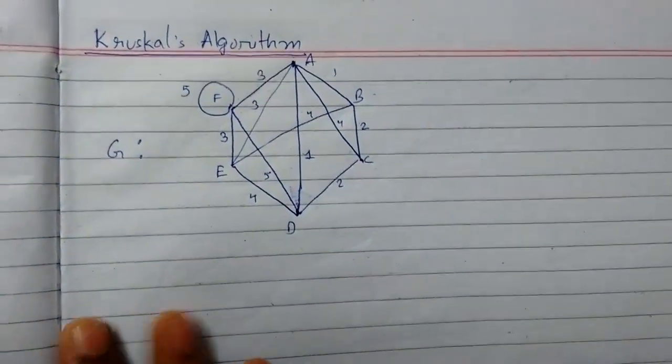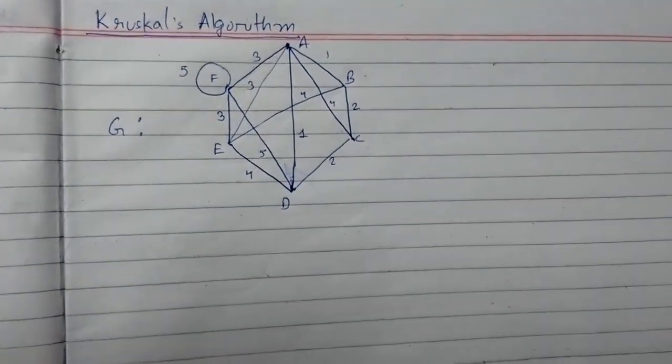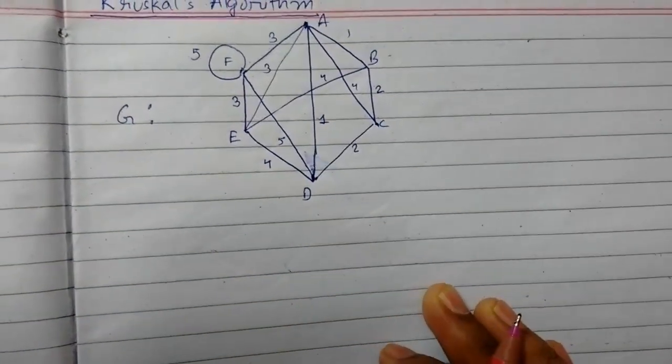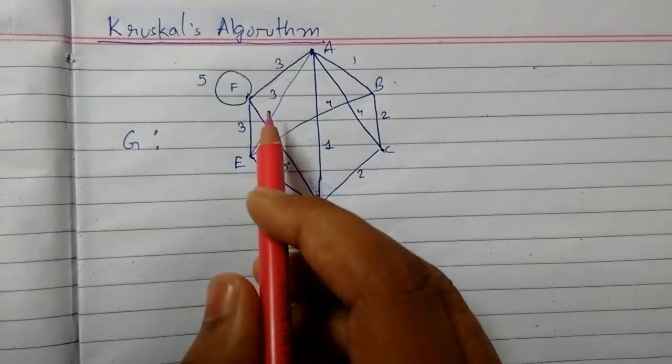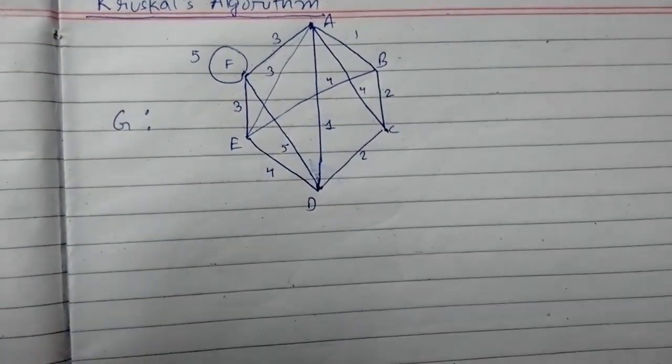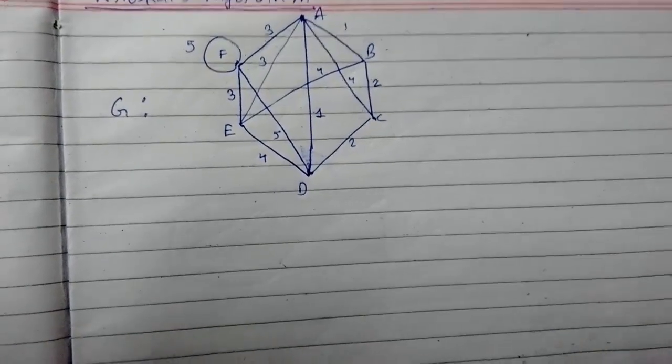So this is our graph. Now to apply Kruskal's method, first we will make a list of all the edges. Self-loops and parallel edges will not be counted. This graph contains six vertices.